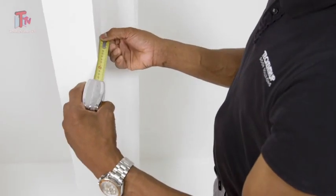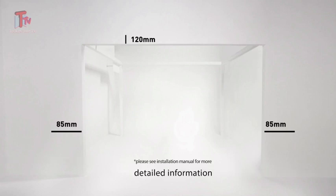Before we start with the actual installation, please check whether the delivered door is suitable for this particular installation situation. Therefore, we measure the clear width and the clear height. We need a minimum lateral space of 85 millimeters on both sides. We need a minimum of 120 millimeters lintel height. For bigger doors, we need 140 millimeters.